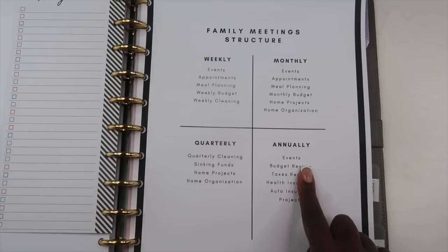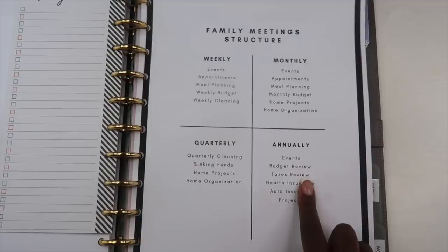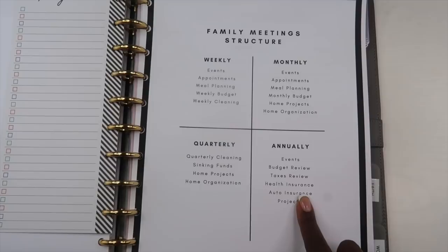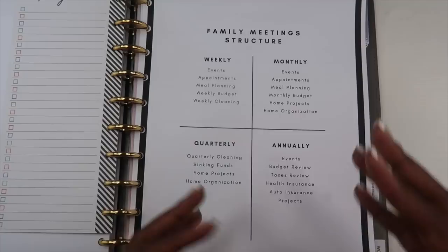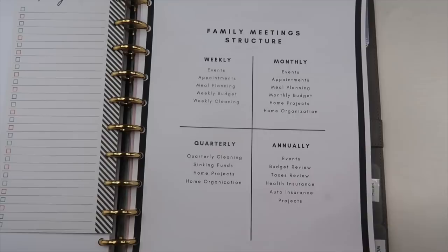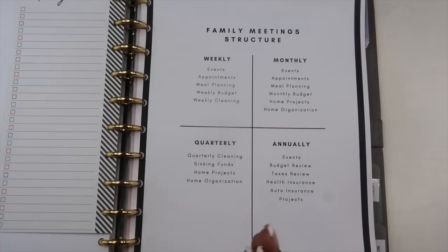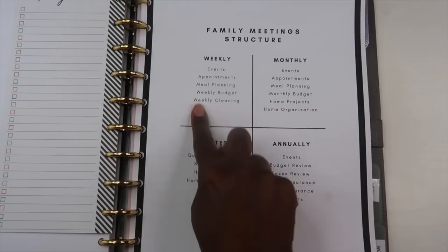Annually we talk about events for the next year, do our annual budget review, discuss taxes, review our health insurance, auto insurance, and any projects we may want to do in the next year. Having this family meeting structure is a great way to help us stay on top of different things as a family. Life gets crazy and it's very easy to forget about everything you've planned, so we set aside certain days — every Sunday is our weekly meeting.